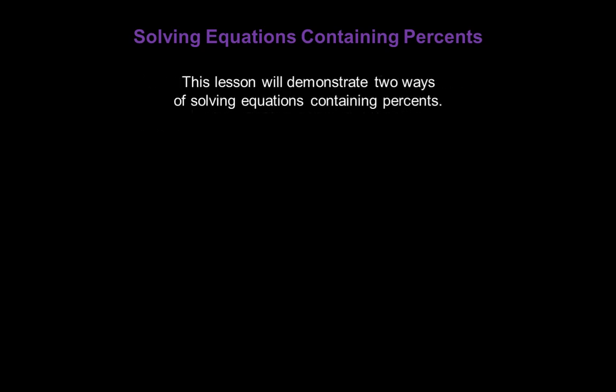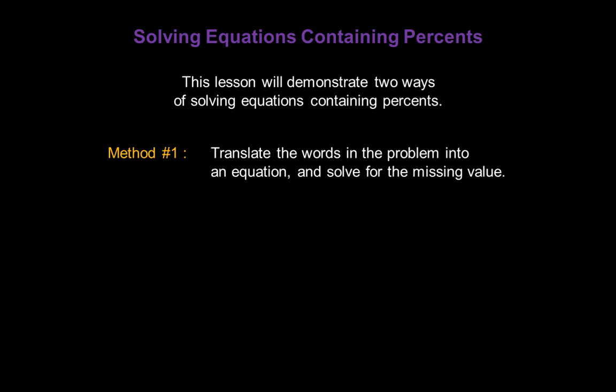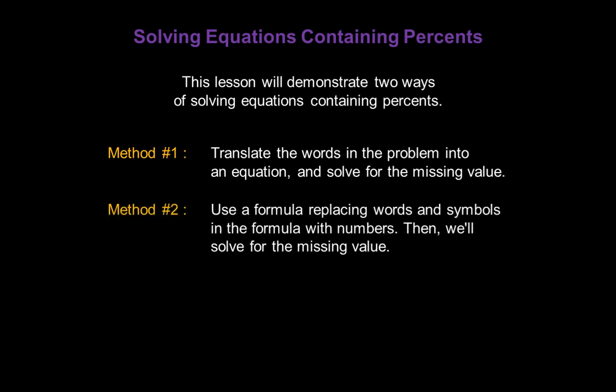This lesson will demonstrate two ways of solving equations containing percents. In method number one, we'll translate the words in the problem into an equation, and then solve for the missing value. In method number two, we'll use a formula, replacing words and symbols in the formula with numbers, and then solve for the missing value.